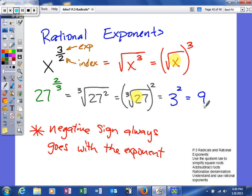One thing you need to remember is if you ever have a negative exponent with a rational exponent, the negative sign always has to go with the exponent. We know how to deal with a negative exponent, but we do not know how to take a negative root. So, if there is a negative sign on your rational exponent, make sure you always put it with your exponent, not the index.